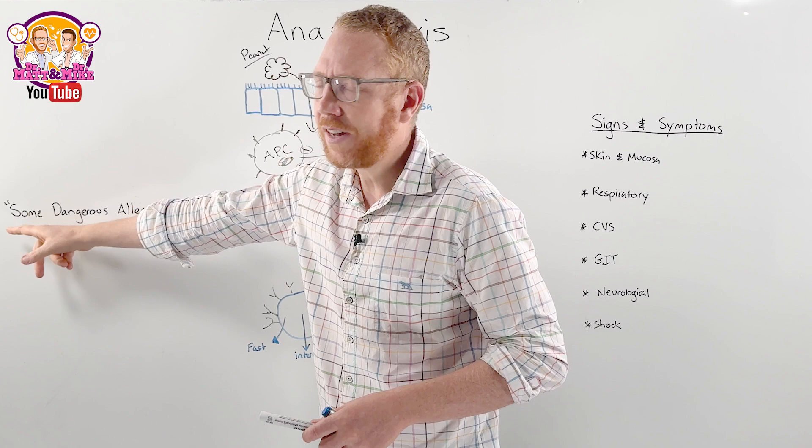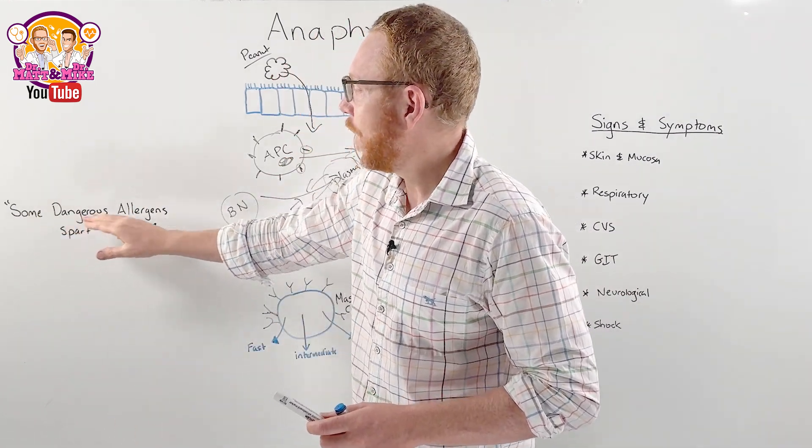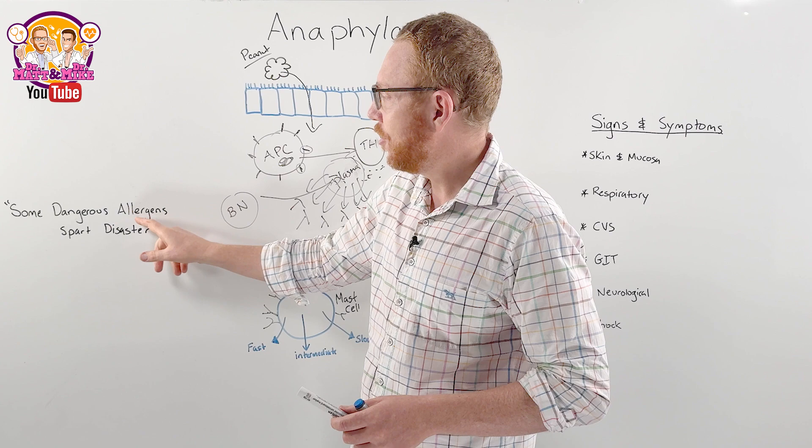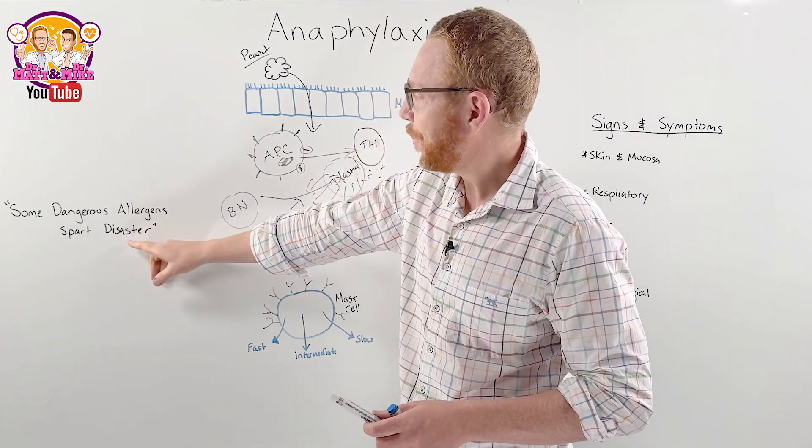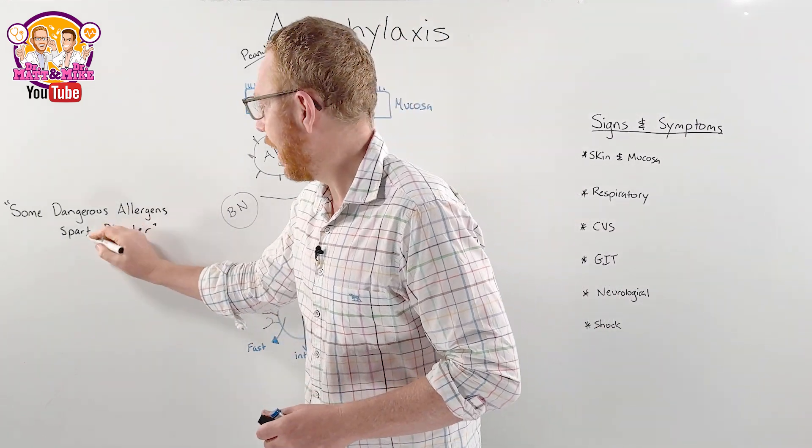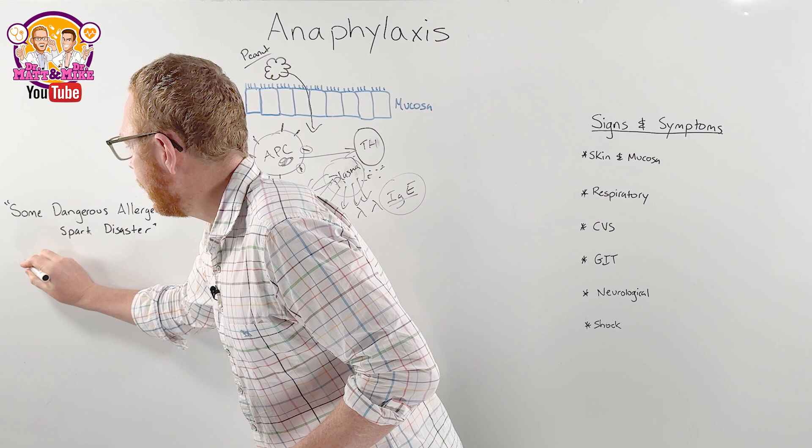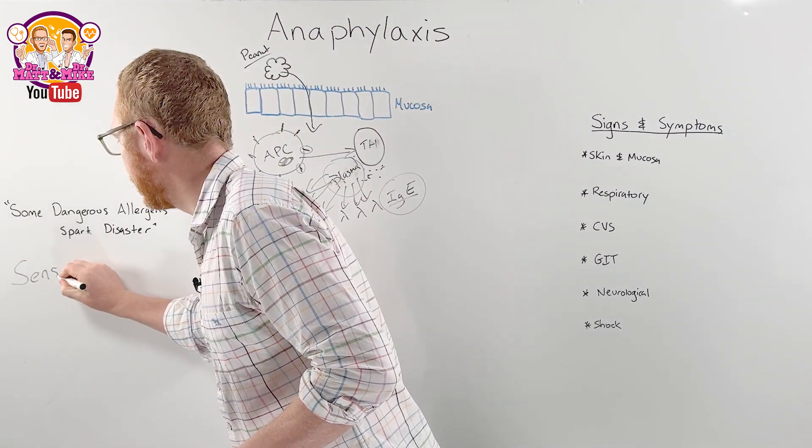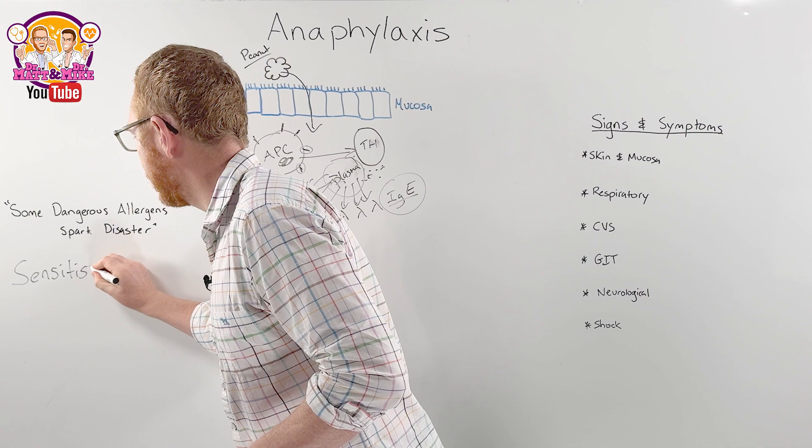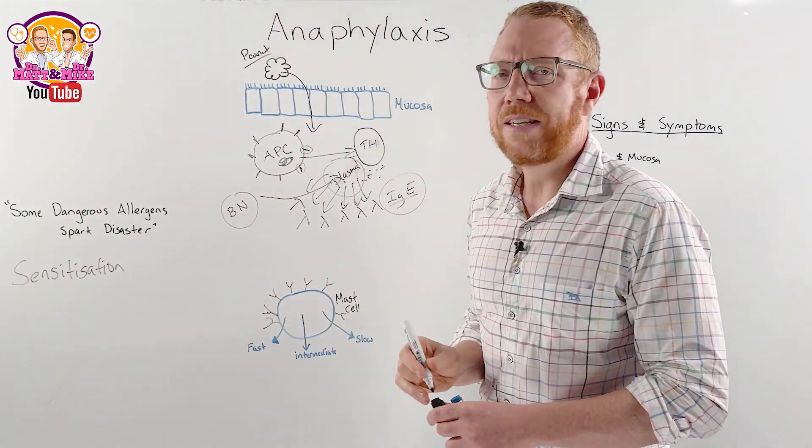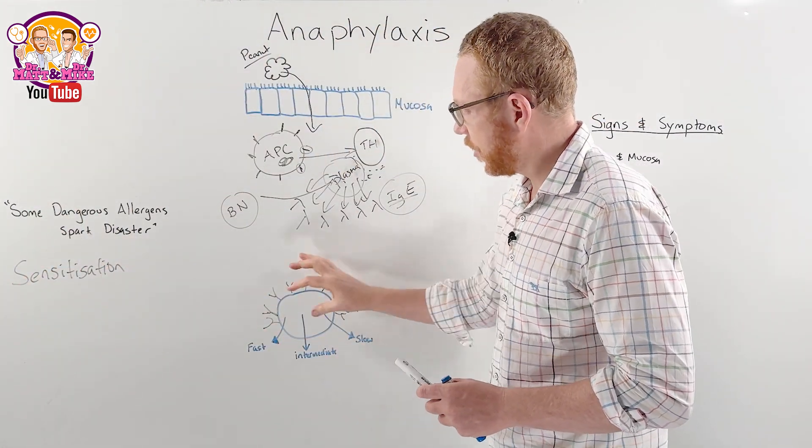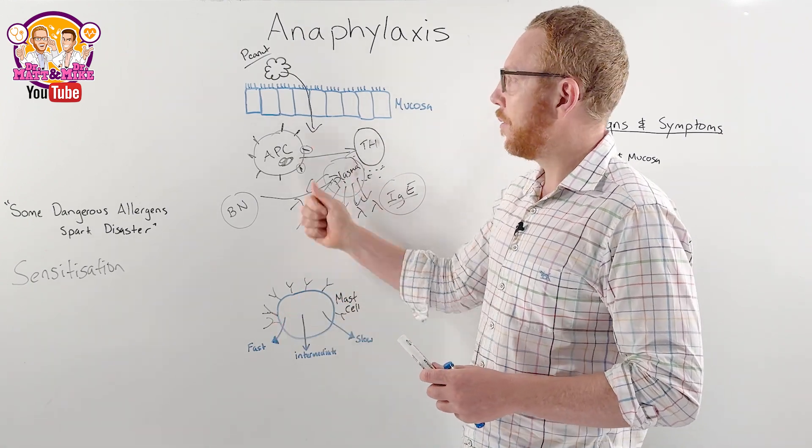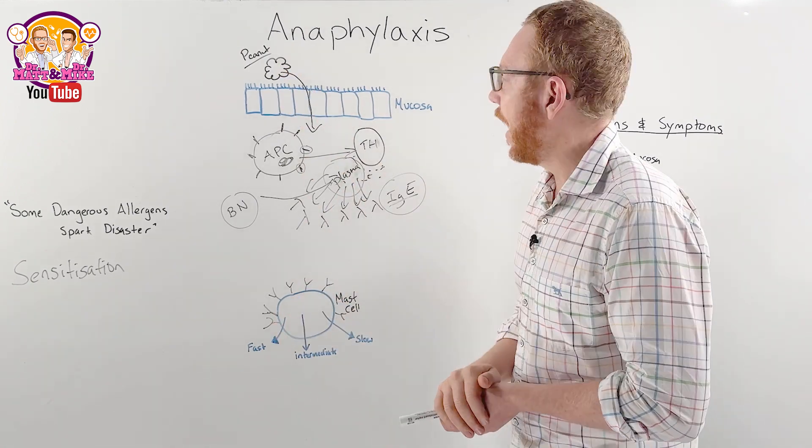And this actually goes to the first S. So over here with this mnemonic, this mnemonic is called, Some Dangerous Allergens Spark Disaster. So the first S here is sensitization. So that's the first S that you need to remember, sensitization. And that is the sensitization of the mast cells, which means the mast cells are now primed. They're going to go against peanut antigens.